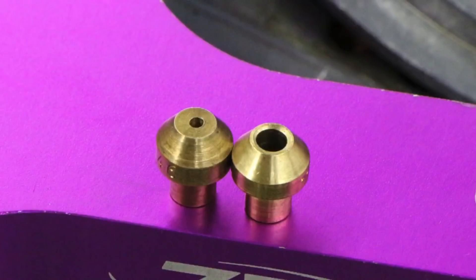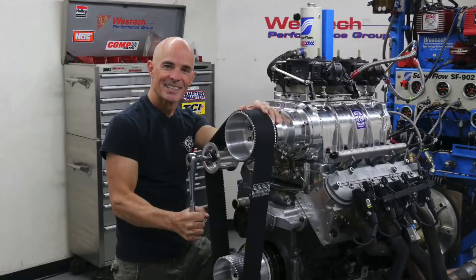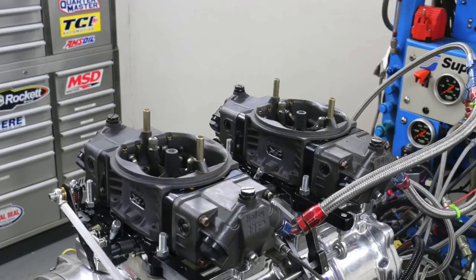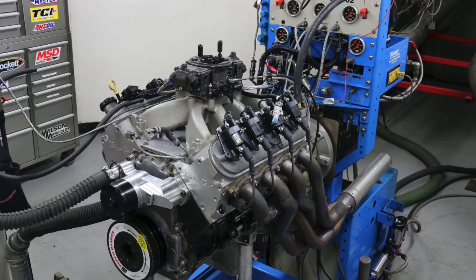The next test was a big 671 supercharger from the Blower Shop run with two carburetors on a stroker 5.3, otherwise known as a 383 boost stroker. Lots of awesomeness.